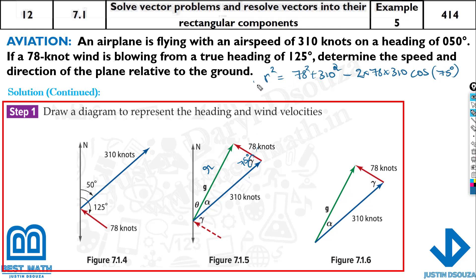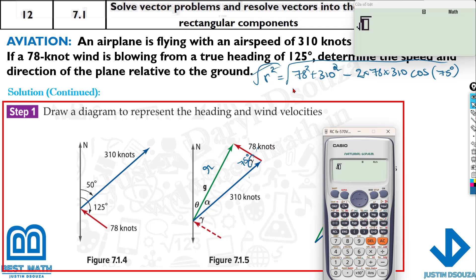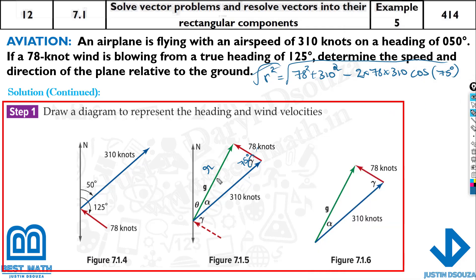Let me calculate: 2 times 78 times 310 times cosine 75 degrees. Close the bracket. Make sure your calculator is in degree mode. Yes, it is in degree mode, so I can use 75. If it was in radian, the answer would be wrong. So press shift, 4, and 3 to clear your calculator. The default mode is degree. The answer is 299.44. So we got the magnitude of the plane.